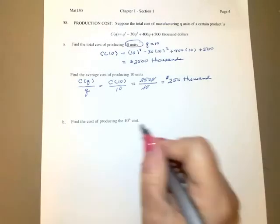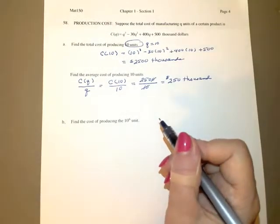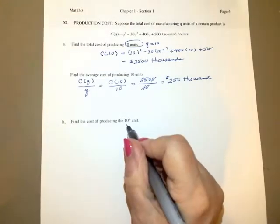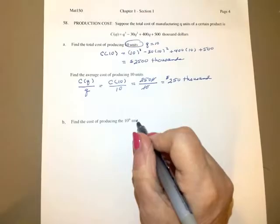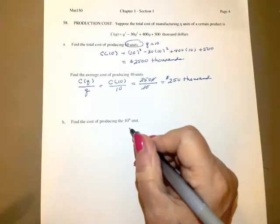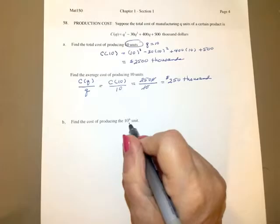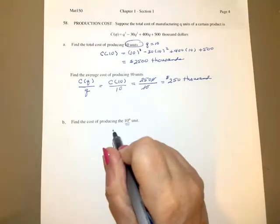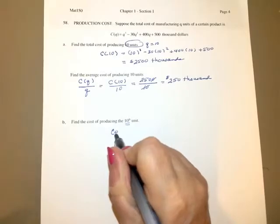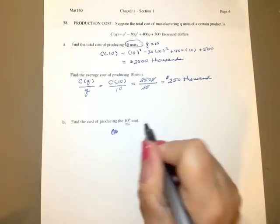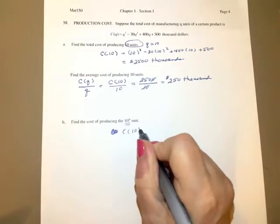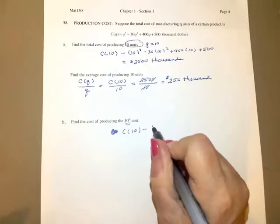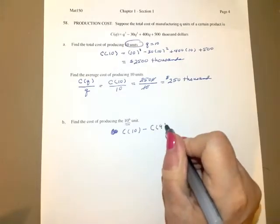Find the cost of producing the 10th unit. Now, we're only interested in the 10th unit. Remember, C of Q is the total cost of producing 10. So that's 1 through 10. I'm only interested in the 10th unit. So that says I would want to know what is the cost of the first 10 subtract the cost of the first 9.